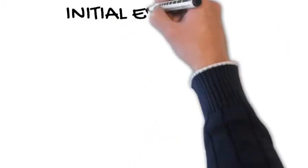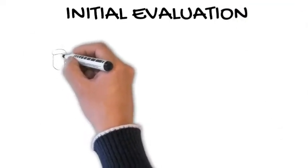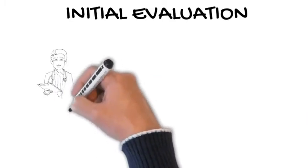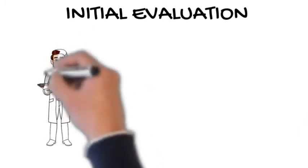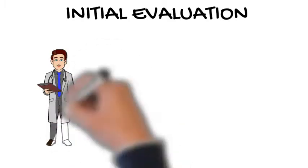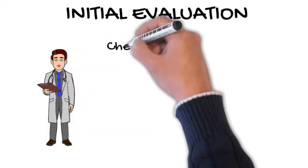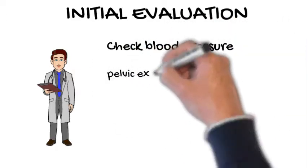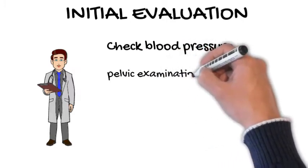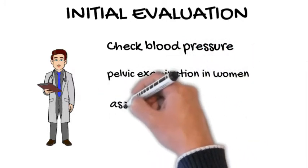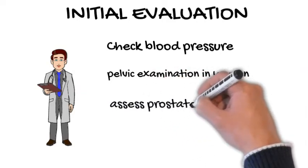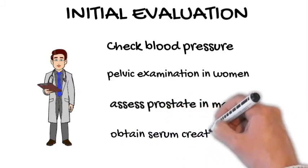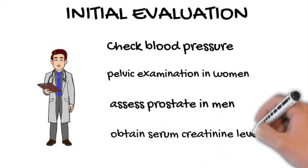Initial evaluation: All patients with confirmed asymptomatic microscopic hematuria should provide a patient history and have a physical examination that includes blood pressure measurement and a laboratory assessment. A pelvic examination should be performed in women to identify urethral masses, diverticular, atrophic vaginitis, or a uterine source of bleeding. A rectal examination is necessary in men to evaluate the size and presence of nodularity in the prostate. A serum creatinine level should be obtained to screen for medical renal disease and to evaluate renal function before performing a contrast-enhanced radiology test.